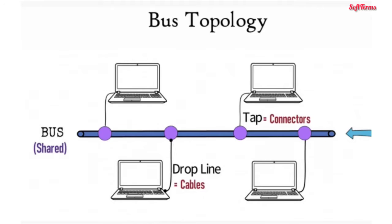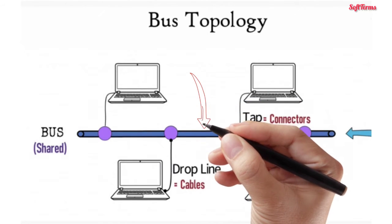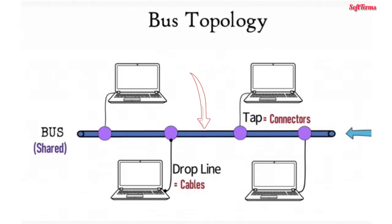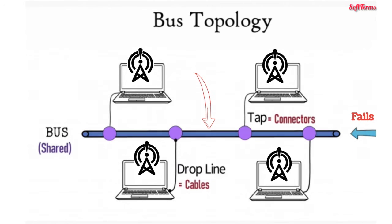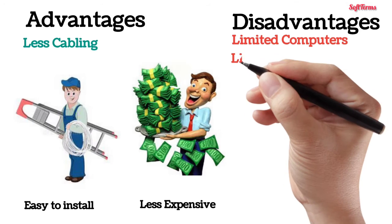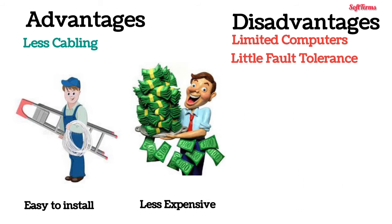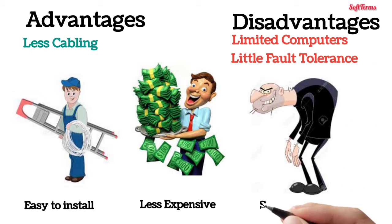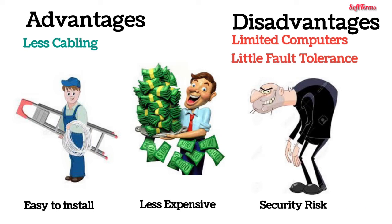In this topology, all computers depend on the central cable for data frame transmissions. So if the central cable fails, it paralyzes the whole network. That is, bus topology has very little fault tolerance. A security risk also exists because all computers can hear what other computers are saying on the shared media.